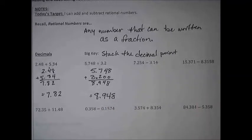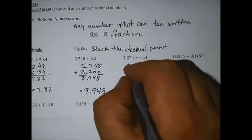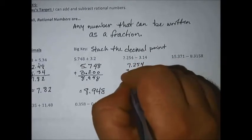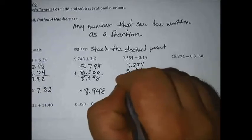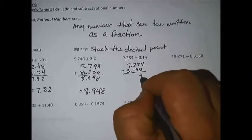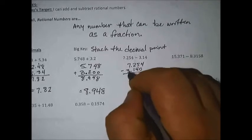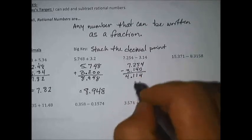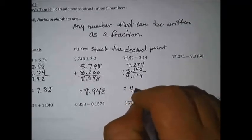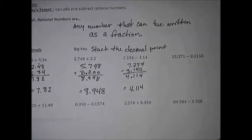On the next couple we're subtracting — same idea, we want to stack that decimal. 7.254 and 3.14 — you can throw that extra zero on there if you feel weird about it. 4 minus 0 is 4, 5 minus 4 is 1, 2 minus 1 is 1, and 7 minus 3 is 4. When we're subtracting a smaller number from a bigger number, we will get a positive.